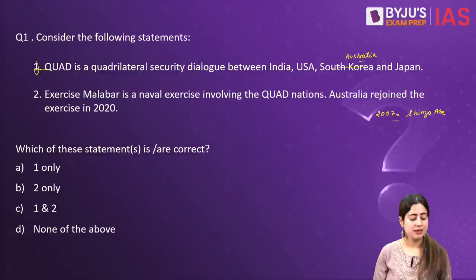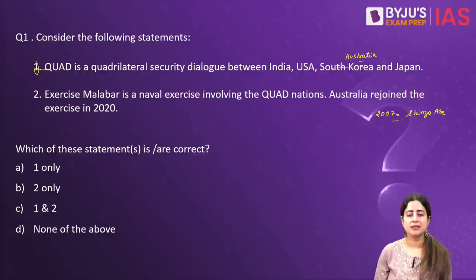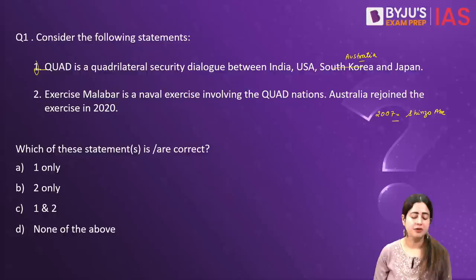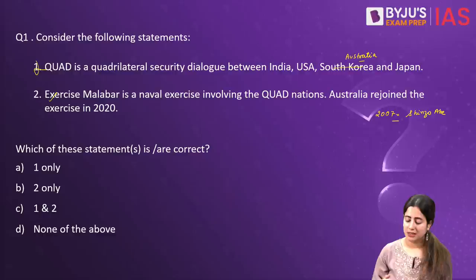Looking at the second statement regarding QUAD, it says Exercise Malabar is a naval exercise including the coordination. This is a valid statement. The Malabar exercise initially started as a bilateral naval exercise between India and US. Much later, Australia and Japan joined in. In fact, Singapore has also been a part of Malabar at some point. So the first part of the second statement is valid.